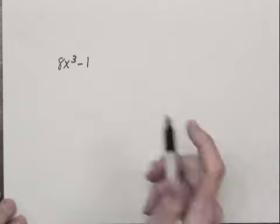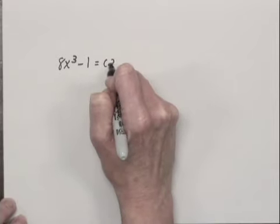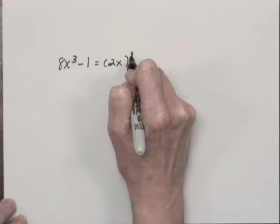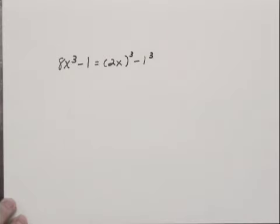We're factoring the expression 8x³ - 1, which we can think of as (2x)³ - 1³.